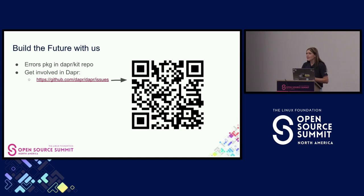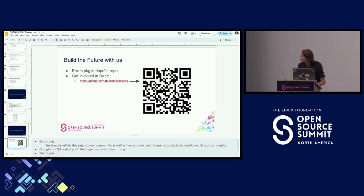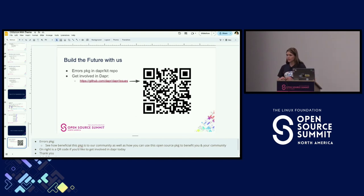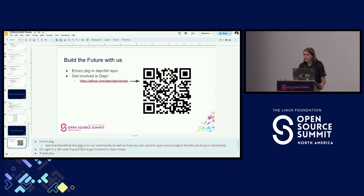I'll open the floor if there are any questions. The question is: where is the best place for folks to get started in Dapr? We have a ton of docs at dapr.io. There are tutorials, we have a repo dedicated to quick starts, and we do have examples that you can run through in all of the SDKs. So if you're using Java, Python, JavaScript, Go, or whatever it may be, there are a ton of great examples with READMEs you can look up.